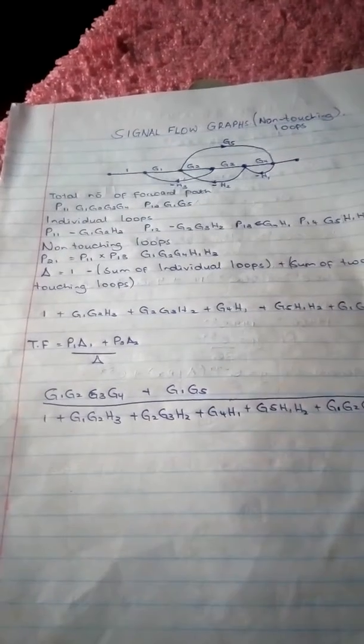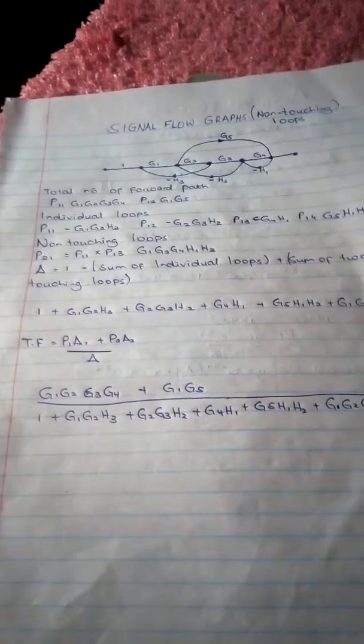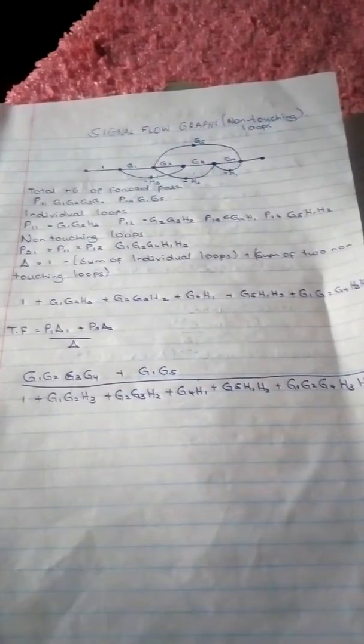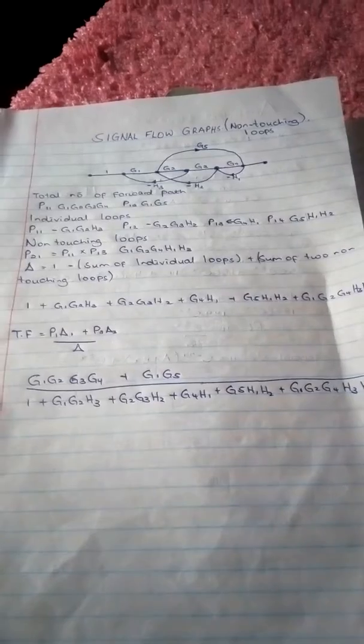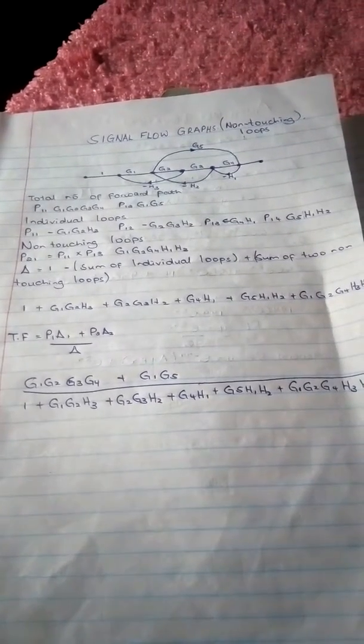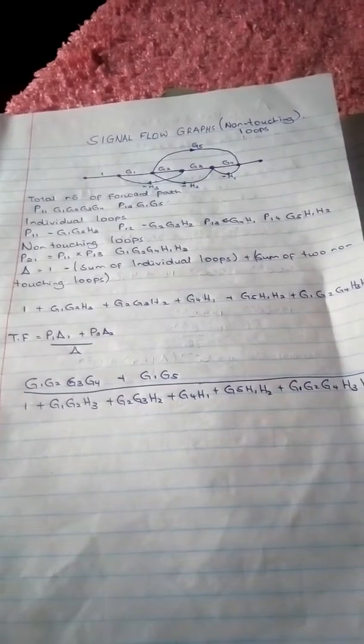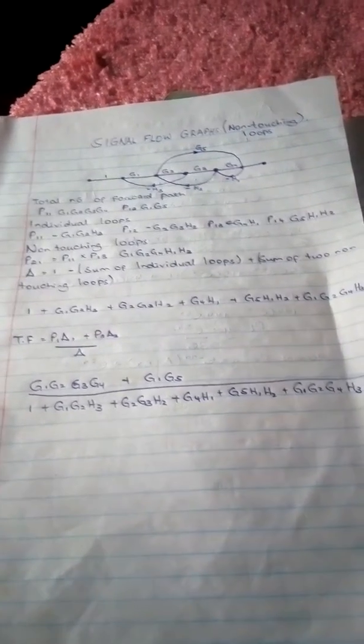Delta equals 1 minus sum of individual loops plus sum of two non-touching loops. For example, it's 1 plus G1 G2 H3 plus G2 G3 H2 plus G4 H1 plus G5 H1 H2 plus G1 G2 G4 H3 H1.